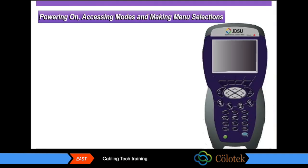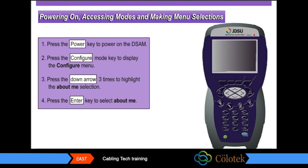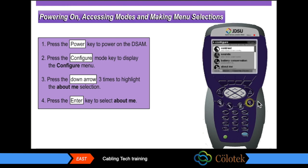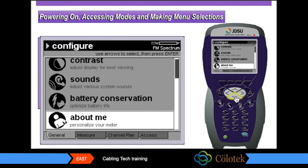Now you will power on the DSAM and navigate using the mode, arrow, and enter keys. You will use your mouse to simulate the operation of the DSAM — move the mouse to position the cursor over the appropriate button and left-click to simulate pushing the button. Press the power key to power on the DSAM, then press the configure mode key to display the configure menu. Press the down arrow three times to highlight the About Me selection, then press the enter key to select it.